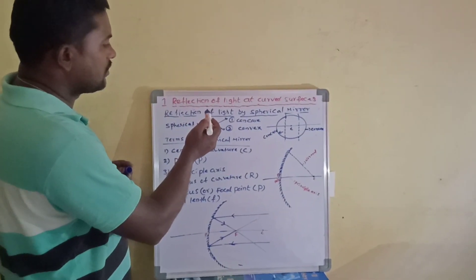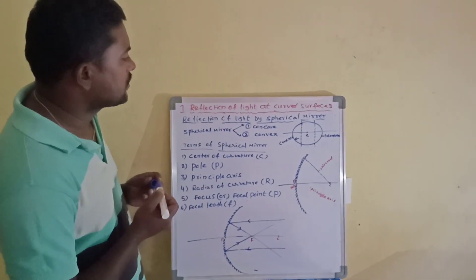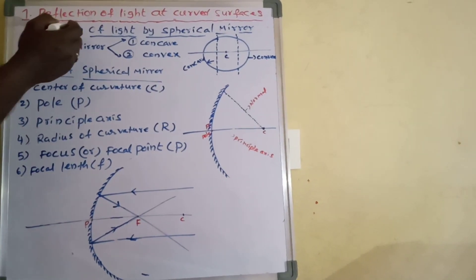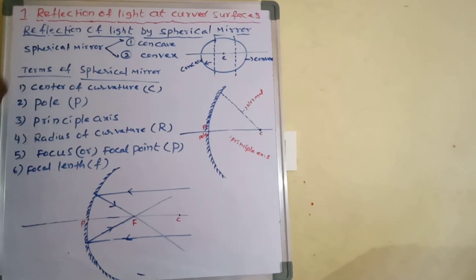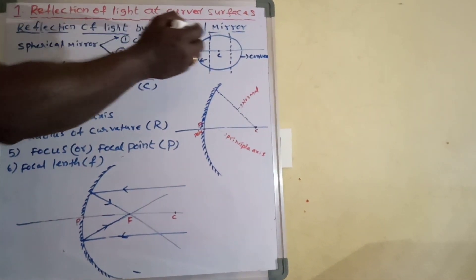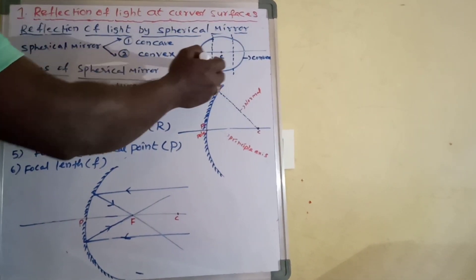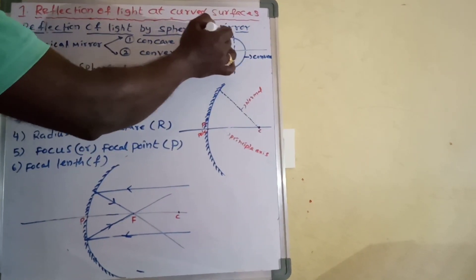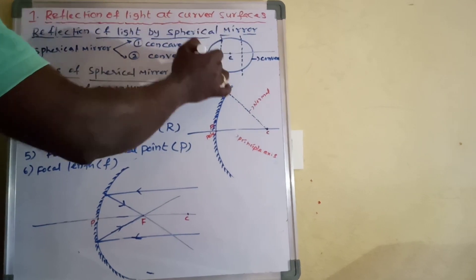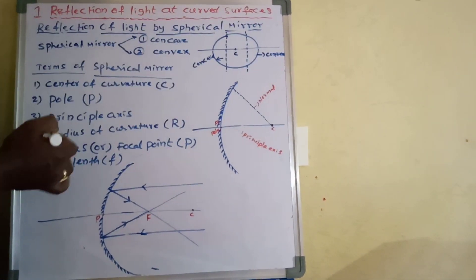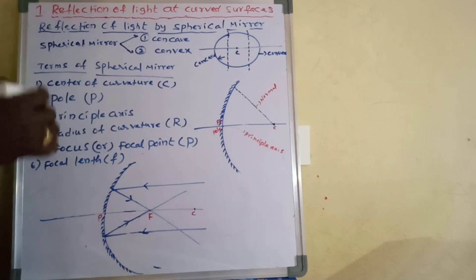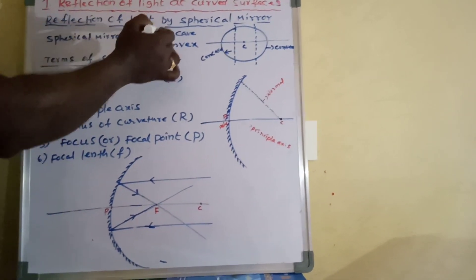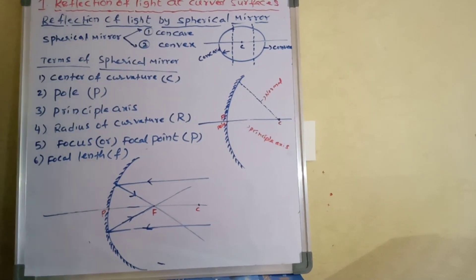Today we discuss the first lesson: reflection applied at curved surfaces. We discuss reflection applied by spherical mirrors. A mirror whose reflection surface is part of a hollow sphere of glass is called a spherical mirror. Generally, spherical mirrors are of two types: one is the concave mirror and the other one is the convex mirror.